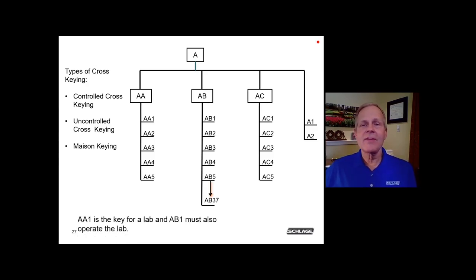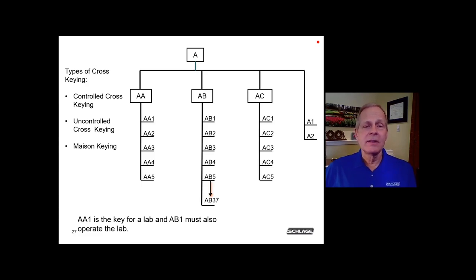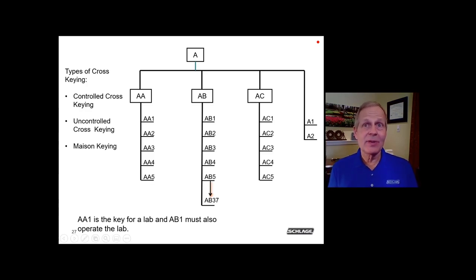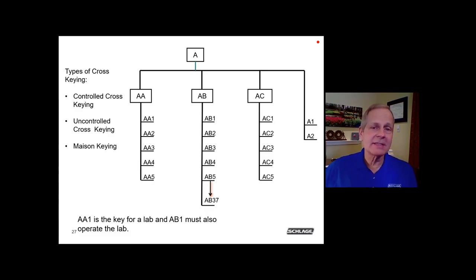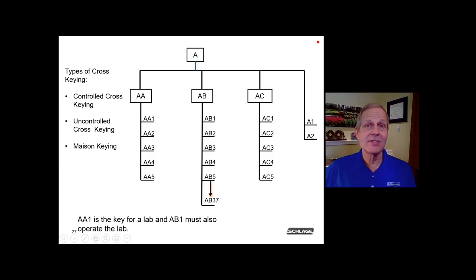One more example: AA1 operates a lab, and we also want AB2 to operate the lab. That is uncontrolled cross-keying, because AA1 comes under the AA master and AB2 comes under the AB master — two different change keys from two different master keys operating the same cylinder.